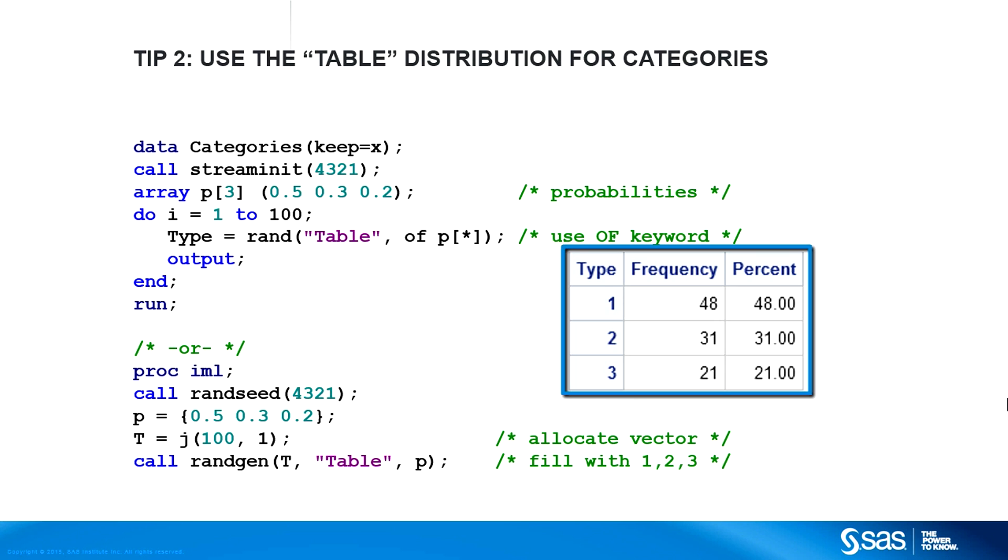In either case, the frequencies of the sample data are close to the specified probabilities. A frequency analysis of the sample shows that about 50% of the observations have a value 1, about 30% have the value 2, and about 20% have the value 3.